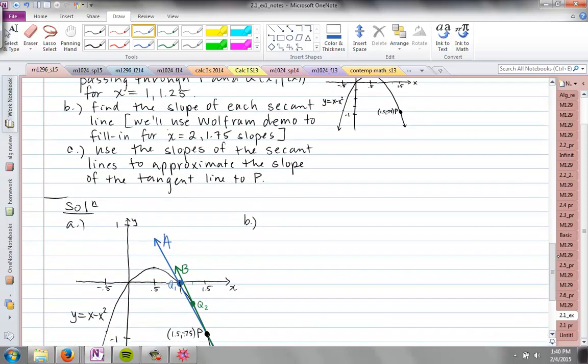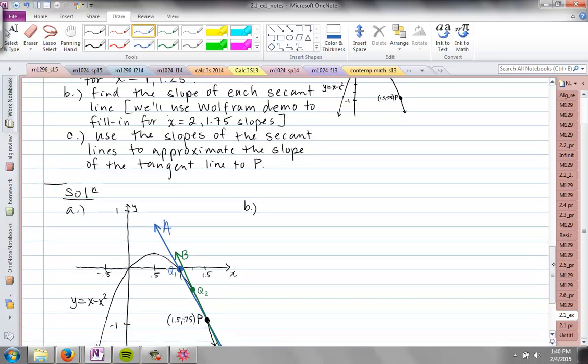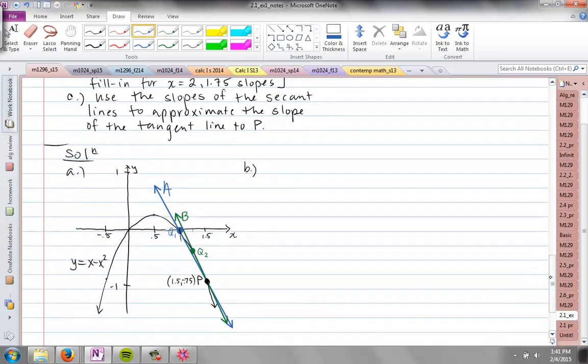Part B says find the slope of each secant line. We're going to use a demo I'm going to show you in a bit to get more points, but we're just going to do these two for now. The slope of the secant line is just finding the slope of the line. I'll color code this - we'll do Line A first, the one in blue using Q₁. The slope equation is m = (y₂ - y₁)/(x₂ - x₁).